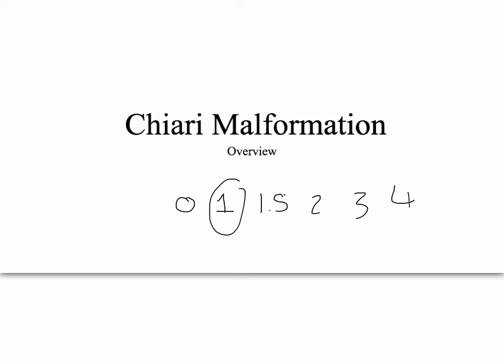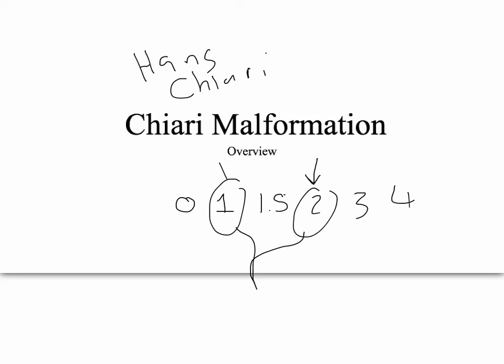I'll briefly explain the others at the end of this video. Some people call this the Arnold-Chiari malformation — specifically, that's referred to in type 2 Chiari malformations. Dr. Hans Chiari is who this is named after. In the 1890s, he described types 1, 2, 3, and 4. In the early 1800s, another professor, Julius Arnold, described specifically type 2. So there's your history lesson.